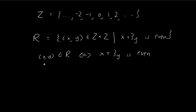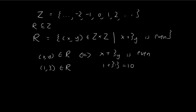For an example, we know that (1, 3) is actually an element of R because 1 plus 3 times 3 is equal to 10, and this is even. So that's why (1, 3) is an element of R. And you can also see that R is actually a subset of the Cartesian product of Z with itself, so R is a relation on Z.